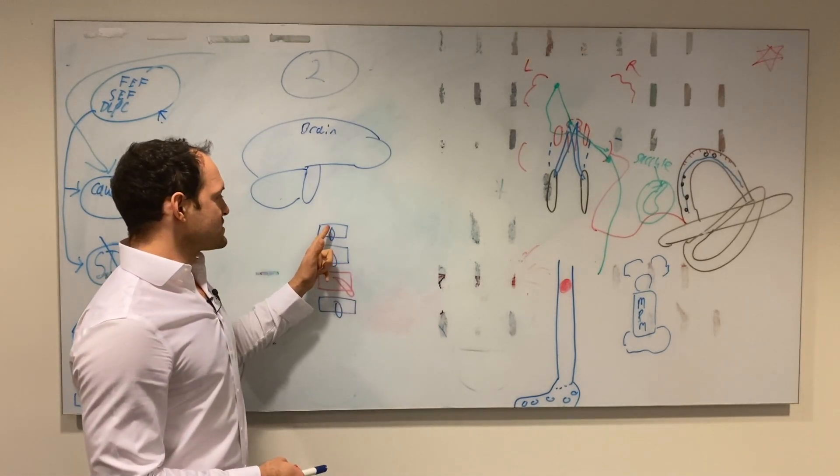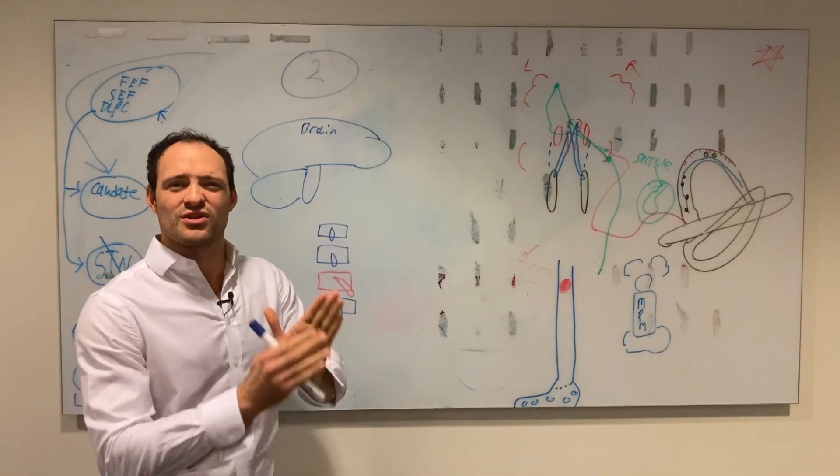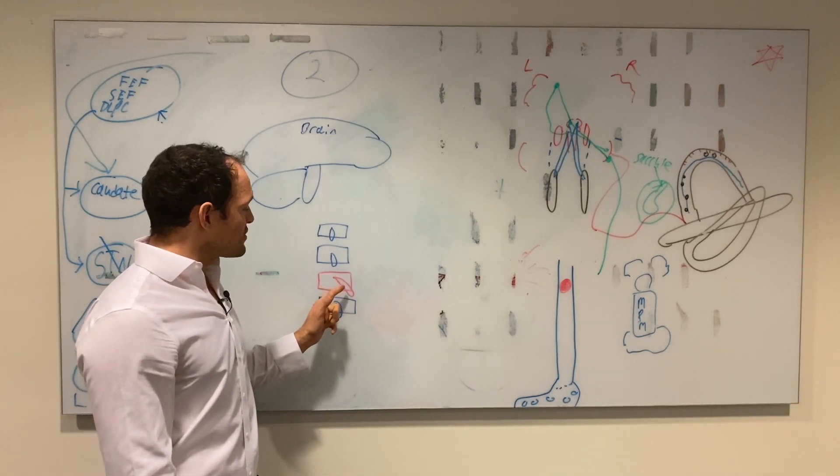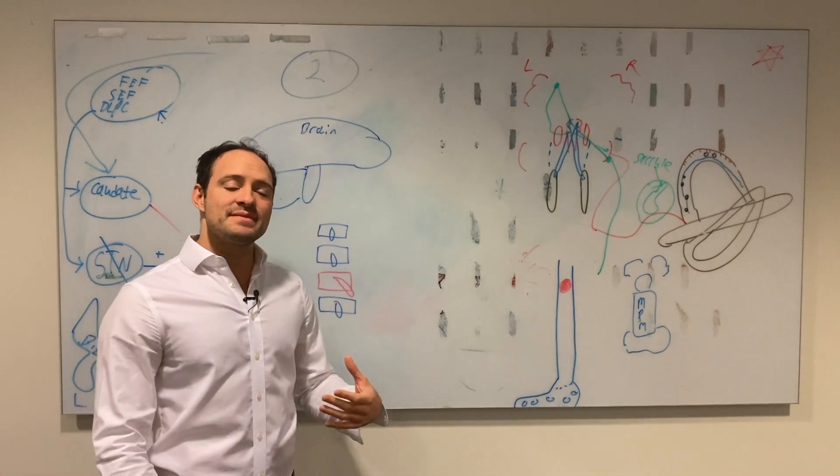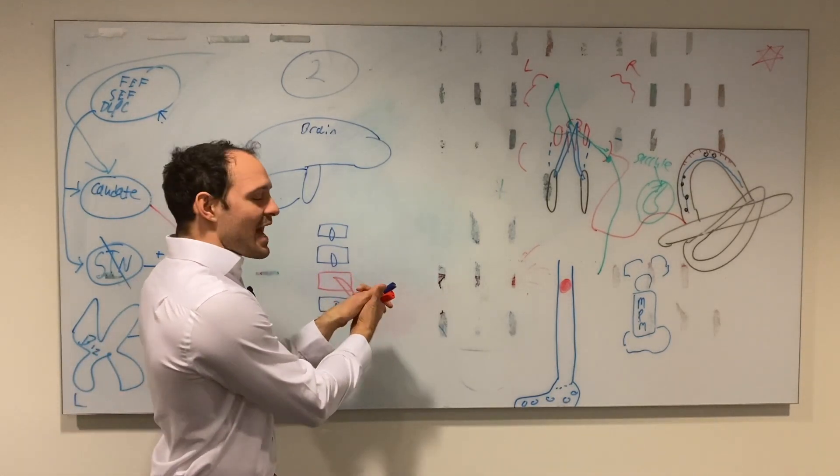the box would be the vertebrae and the little squiggly thing in the middle would be the spine of it or the middle of it. So it's in perfect alignment but when we get to this red box we can see the spine is all the way to the left and this means that the vertebrae is out of alignment or it's shifted to the left.